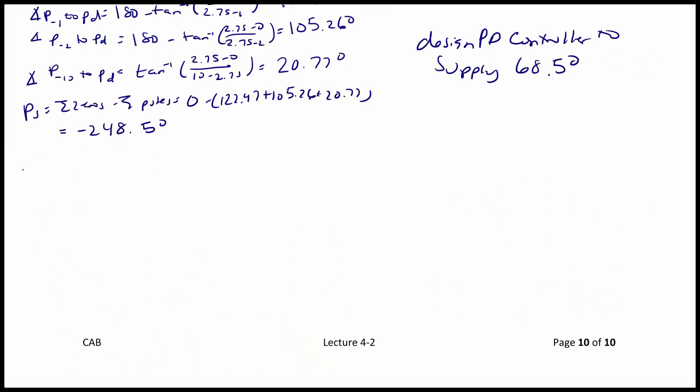We're ready for step 4. For step 4, the form of the PD controller is Gc(S) = Kp + Kd·S. This can also be written as Kd(S + Kp/Kd), and it can also be written as Kp times (S + Zpd), where Zpd is the zero for the PD controller.